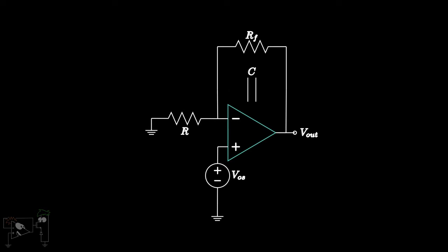This VOS generates some current through the resistor R. However, unlike the case of the ideal integrator, the current now has a pathway to move other than the capacitor. Hence, the current flows through RF and the circuit reduces to the non-inverting amplifier.